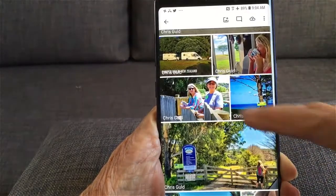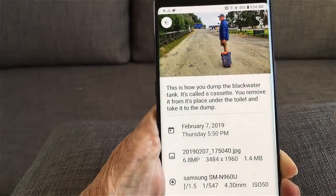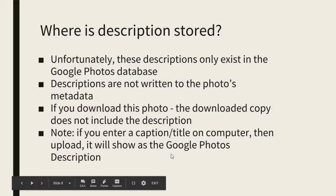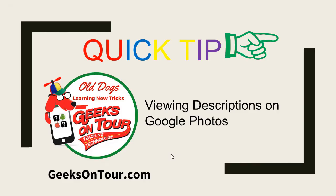So to view descriptions, open the photo and swipe up. Now there is one caveat: where is this description stored? Unfortunately these descriptions only exist in the Google Photos database — they are not written to the photo's metadata. So if you download this photo, the downloaded copy does not include the description. However, it does work the other way around: if you add a description on a computer and then upload to Google Photos, it stays. And that's my quick tip about viewing descriptions on Google Photos.